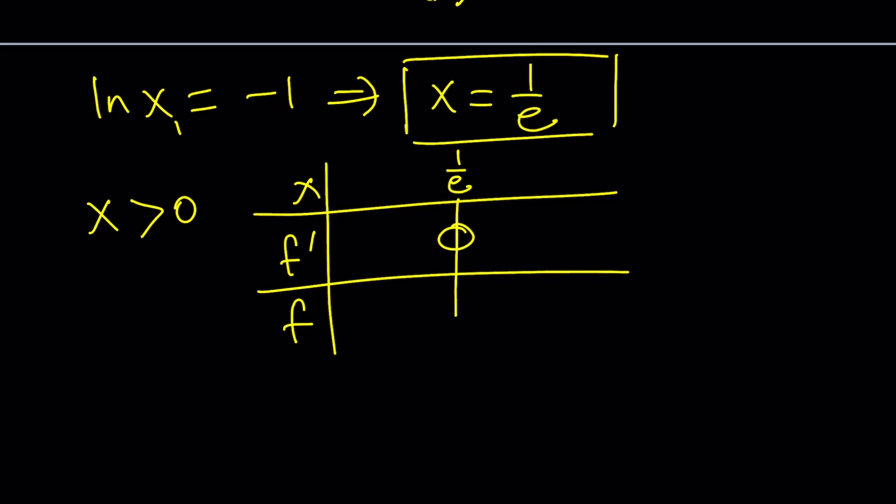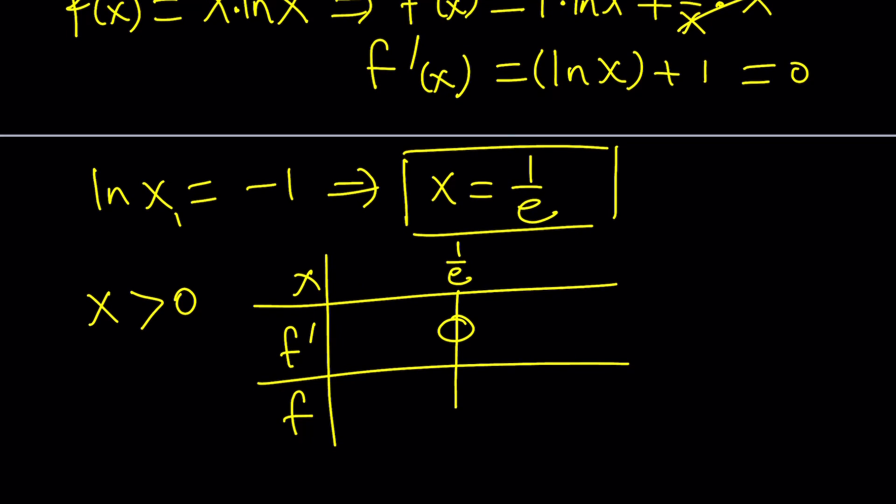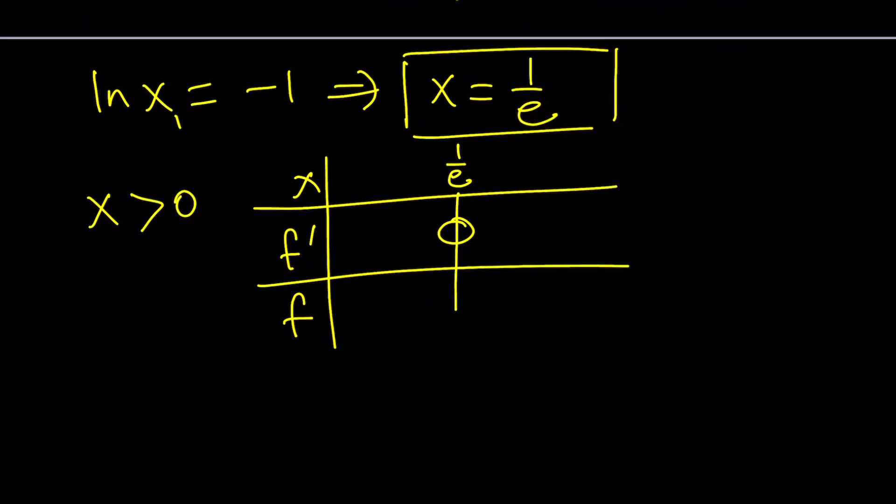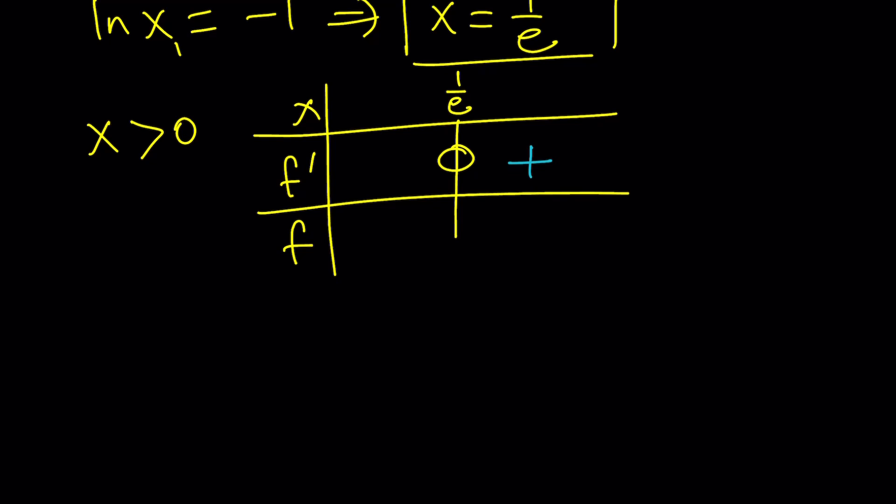And then we're going to put the sign. So plus minus sign, depending on where the derivative becomes positive or negative. How can you tell? Well, you can pick a value that you can test, like something greater than 1 over e, maybe like 1. If x is 1, the derivative is going to be positive because ln 1 is going to be 0, it's going to be 1. So then we can safely say that the derivative is positive here and negative here, which indicates, and by the way, this is important...